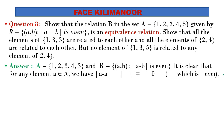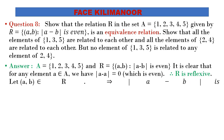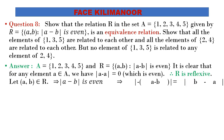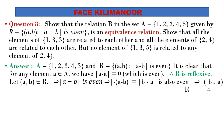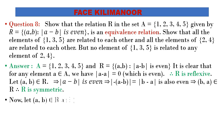For reflexivity: |a−a| = 0, and 0 is an even number. Therefore R is reflexive. For symmetry: if (a,b) belongs to R, then |a−b| is even. Since |b−a| = |a−b|, it is also even, so (b,a) belongs to R. Therefore R is symmetric.